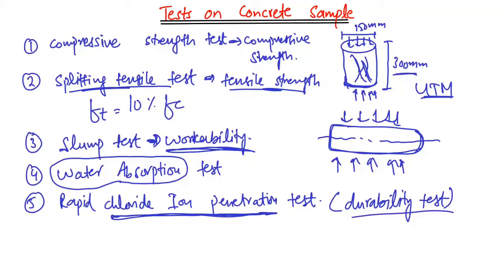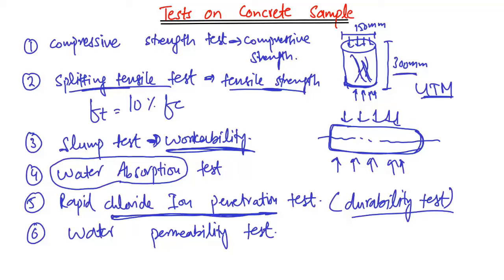The sixth test is the water permeability test, which is used to determine the ability of concrete to resist water permeation. It checks how dense or loose the particle mixture of the concrete is and how much water can penetrate into it.